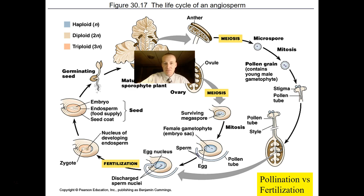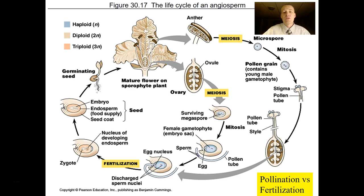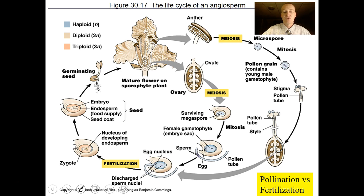You've already seen this life cycle before — we looked at it last lecture. I just wanted to review it quickly because it's important to understand how it's organized. You should be studying this and be able to sketch it out. It's in the study guide, so you're definitely responsible for knowing it. We could start anywhere in the life cycle, so let's start at the anther and the ovary.